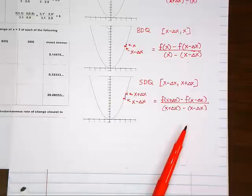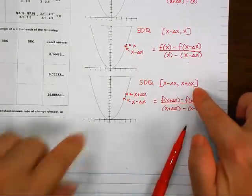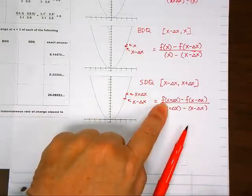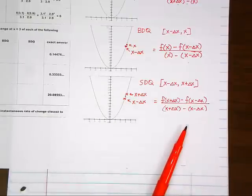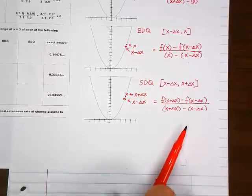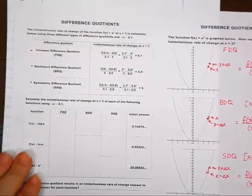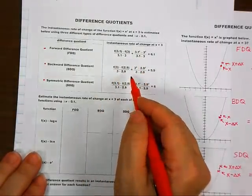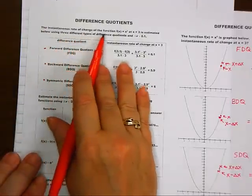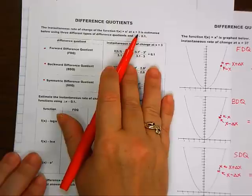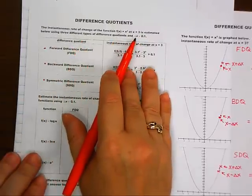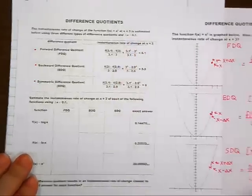Do you understand what's going on? For the SDQ, the larger value X plus delta X goes first in the numerator. The question on the worksheet states: the instantaneous rate of change of F(x) = x² at x = 3 is estimated using three types of difference quotients with delta X = 0.1. Instead of talking in theory like we did on the notes, we're going to talk in reality with actual numbers.